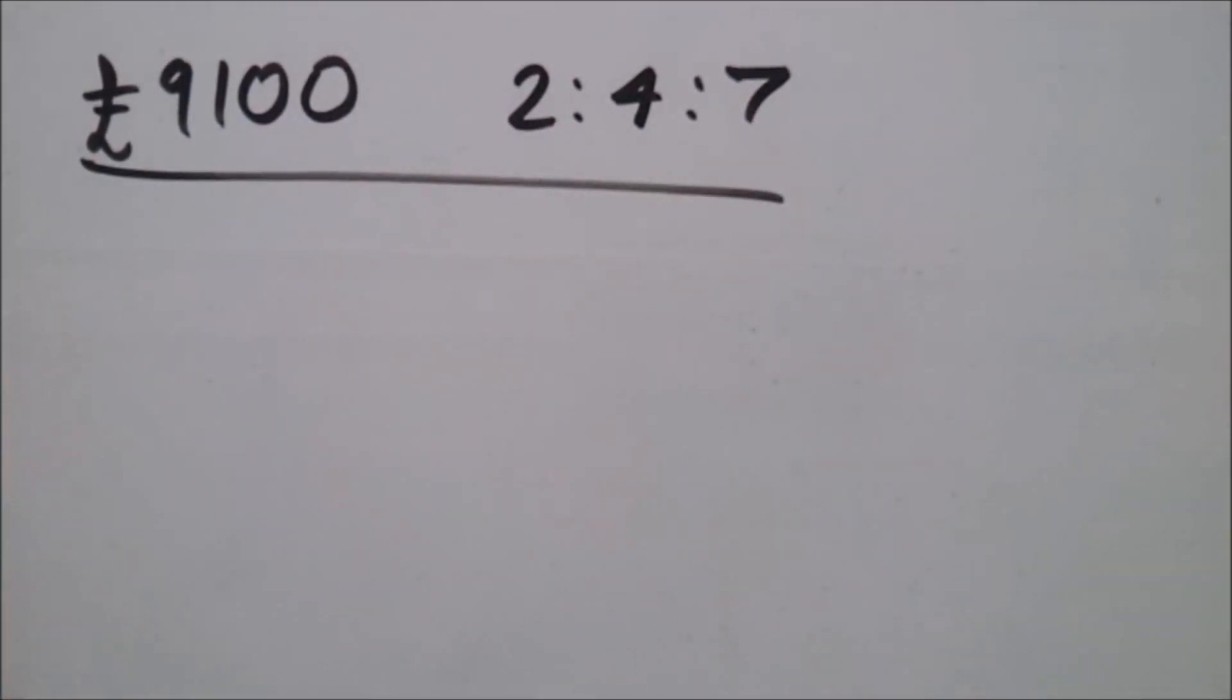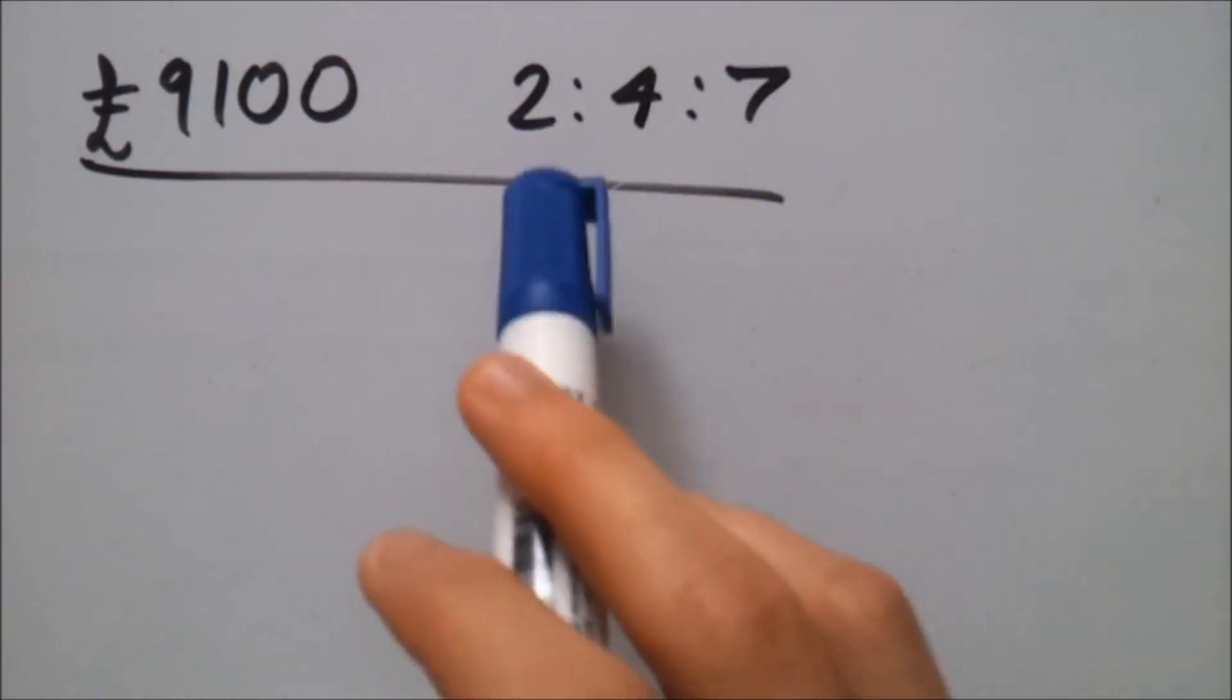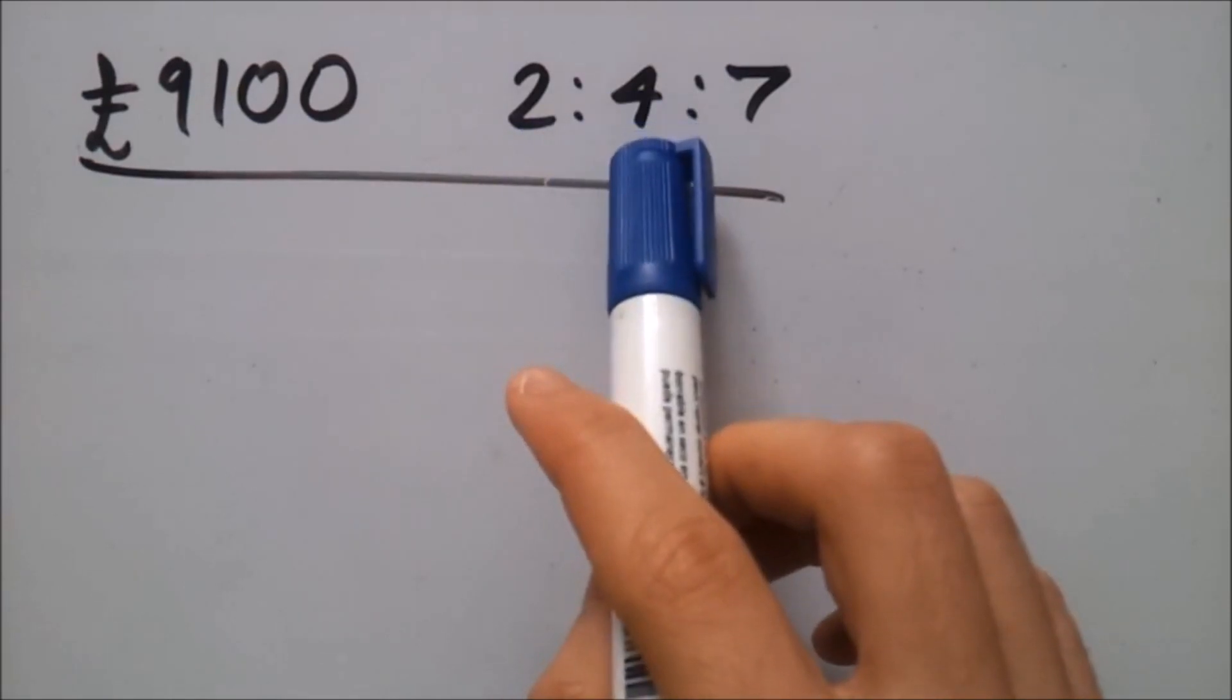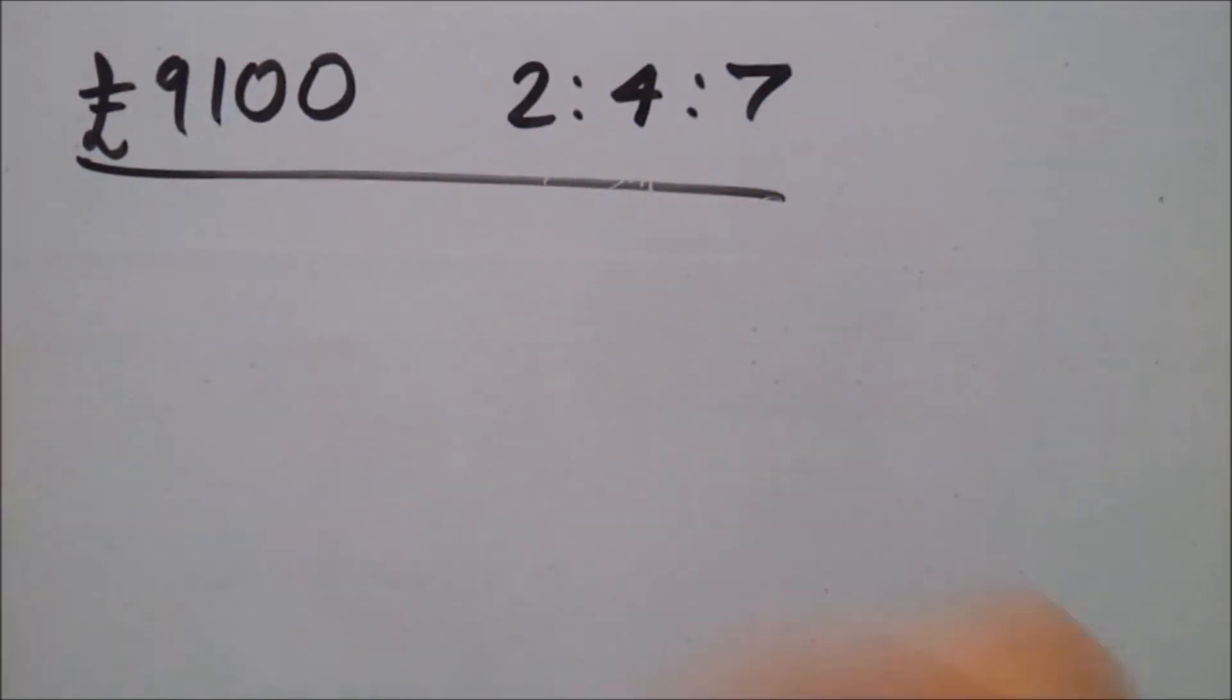Okay, well the first step would be, the easiest step would be to add up the ratios to see how many parts there actually are. So firstly, 2 plus 4 is 6, plus 7 is 13.